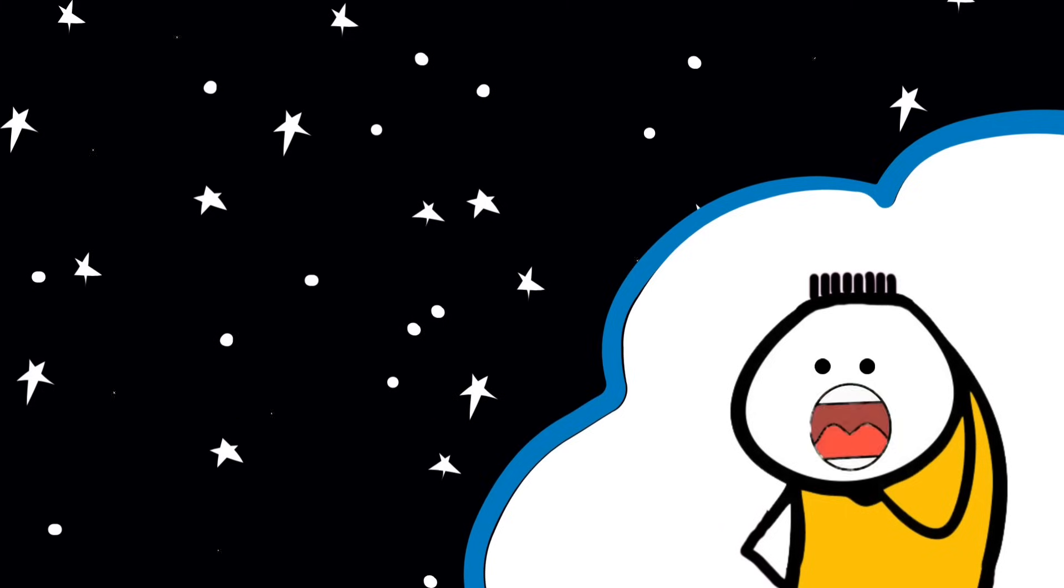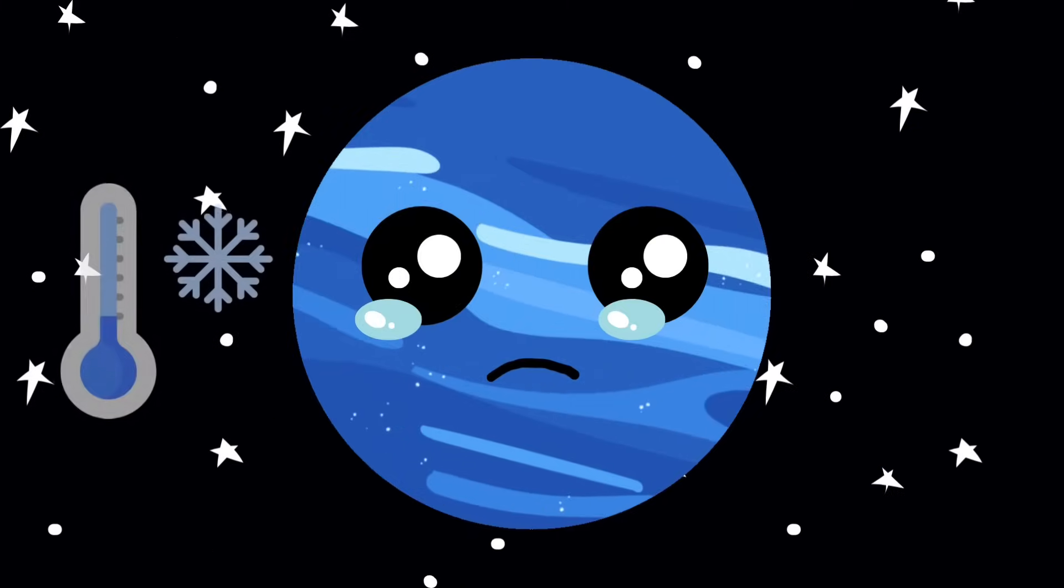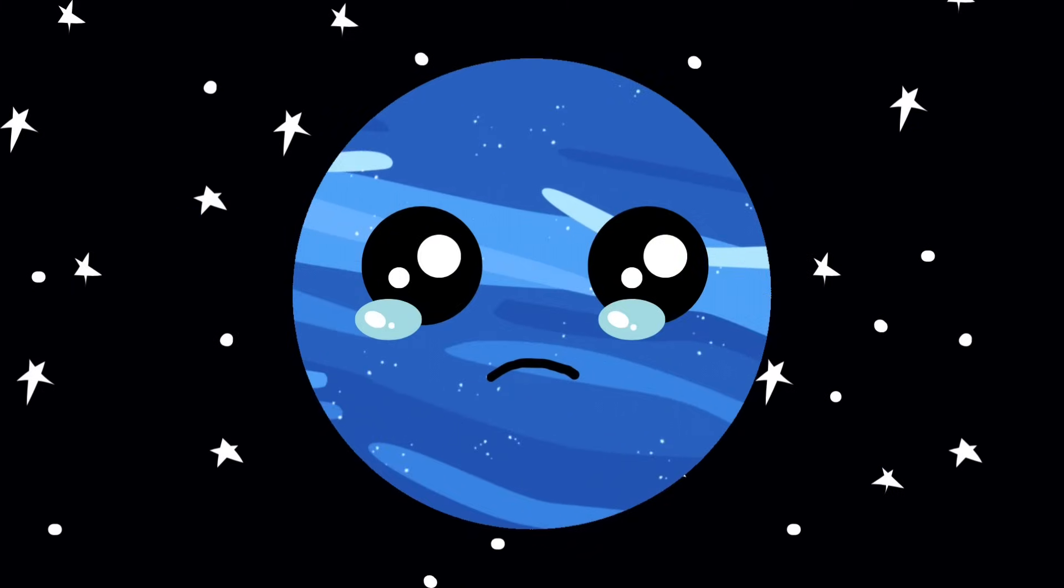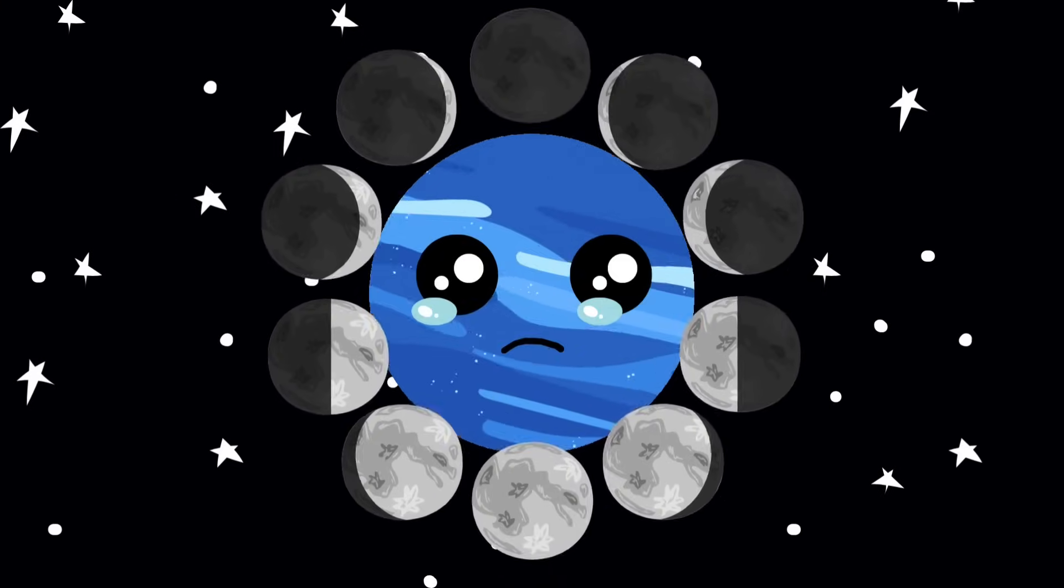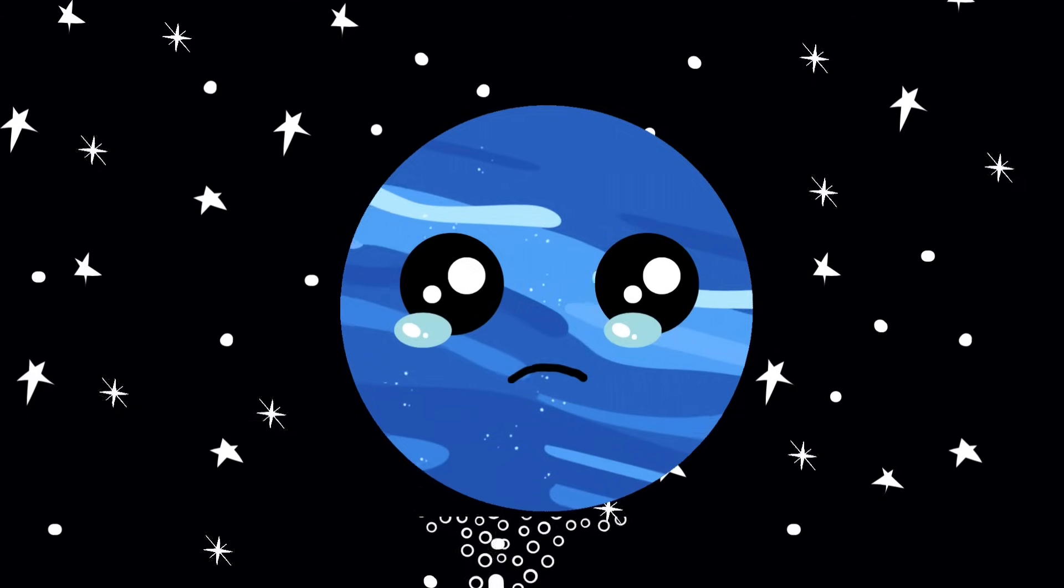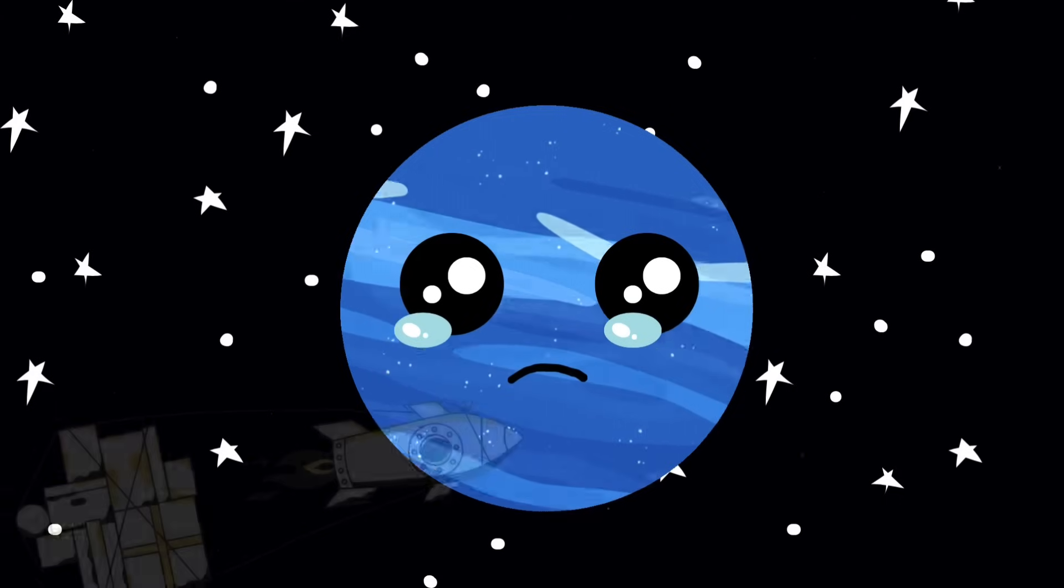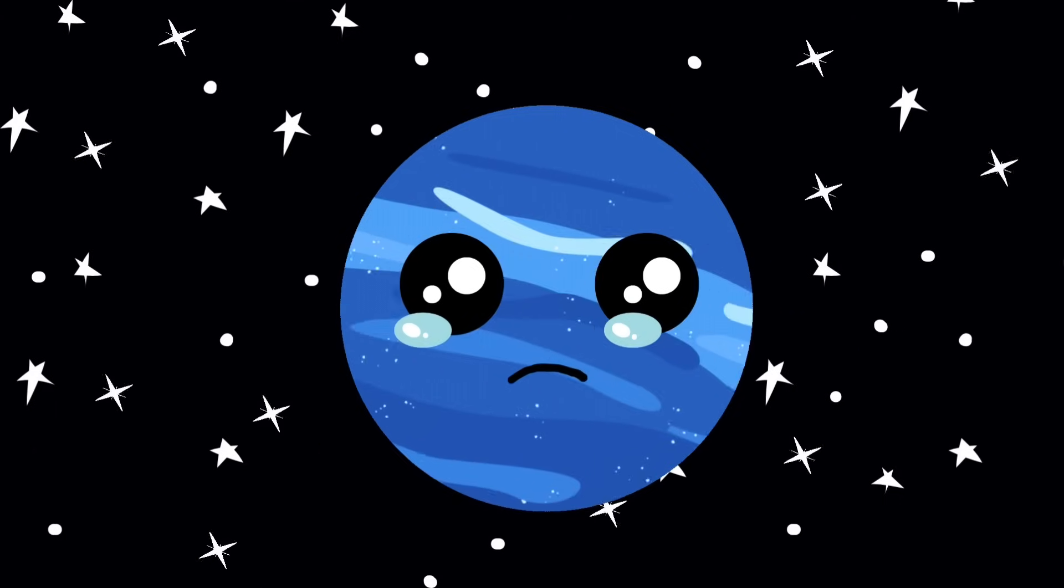So, let's wrap this up. Neptune is cold. Lonely. Ignored. Surrounded by gas and unstable moons. It's got no solid ground to stand on, literally or emotionally. And it's been ghosted by NASA since 1989.